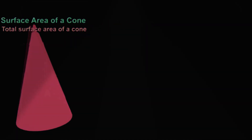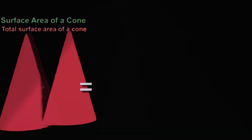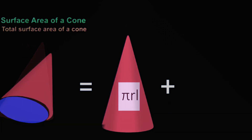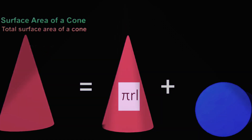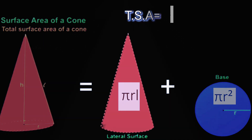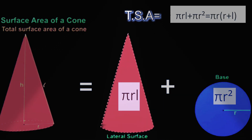Looking at the figure, the total surface area can be calculated as the curved surface area πRL plus the base area πR². So the total surface area of a cone equals πRL plus πR².